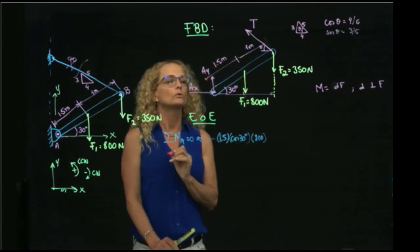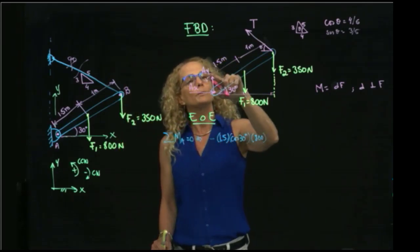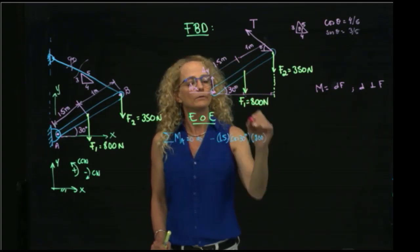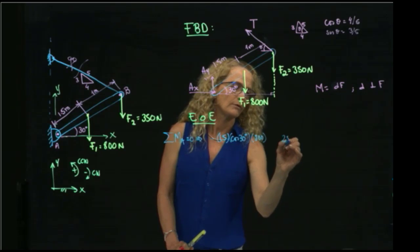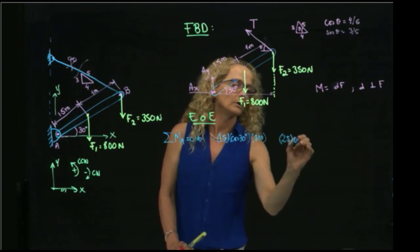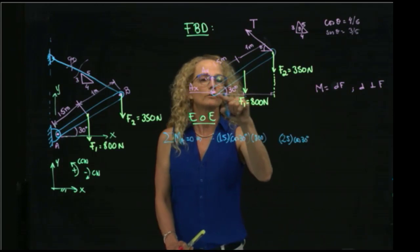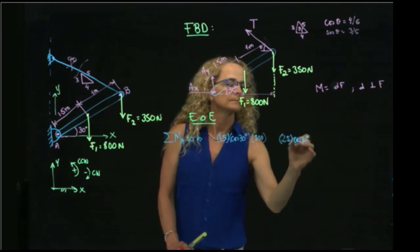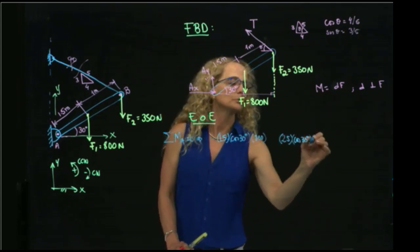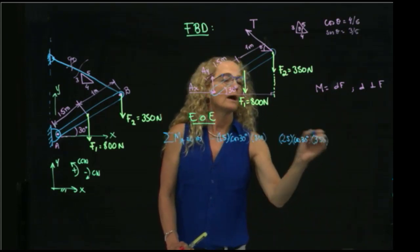And as you see, that will be 2.5 cosine of 30, because it's the adjacent to this hypotenuse, times the force, which will be 350.